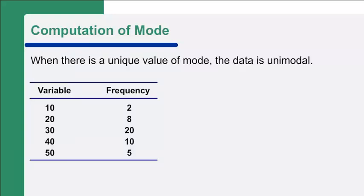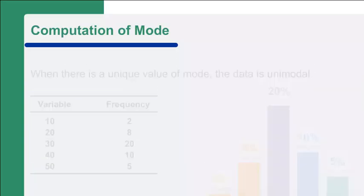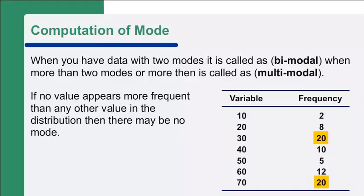When there is a unique mode value, the data is unimodal. When data has two modes, it is called bimodal. When there are more than two modes, it is called multimodal. If no value appears more frequently than any other, there may be no mode.